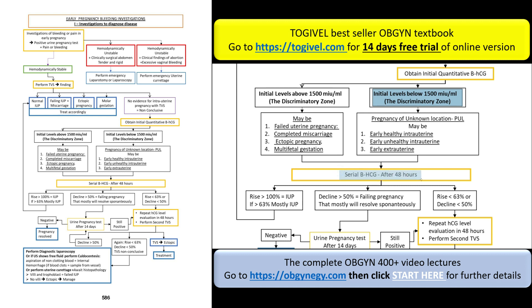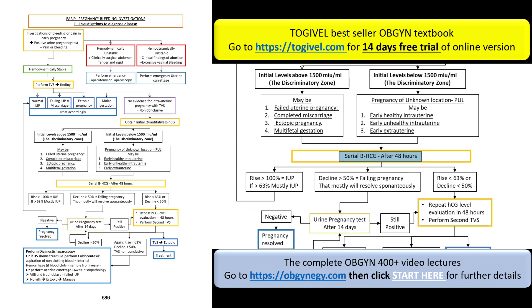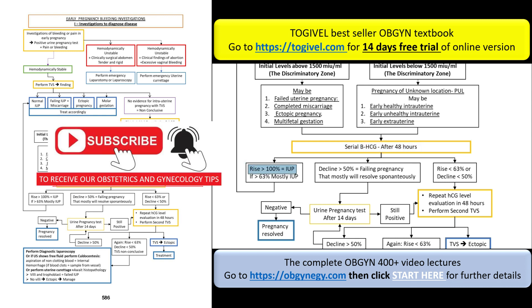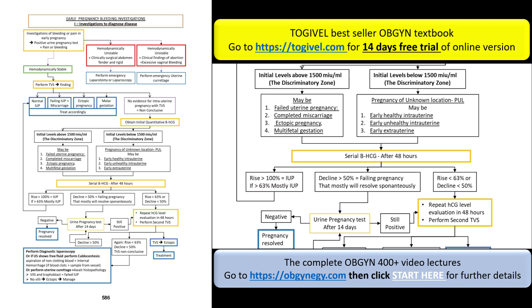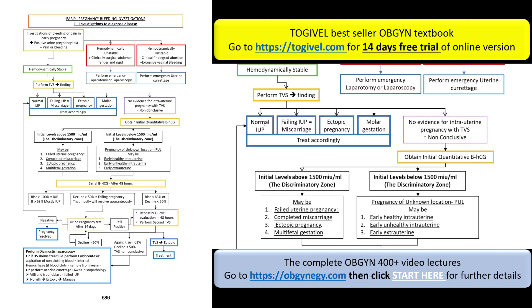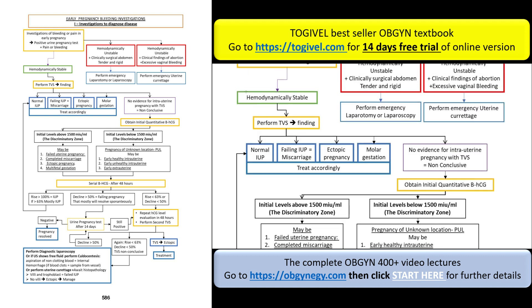To reach a diagnosis, obtain another beta-hCG after 48 hours. If the level rises by 100% — doubling — this only occurs with an intrauterine pregnancy. If the level rises by more than 63% — not doubling but increasing at a rate greater than 63% — statistically in most cases this is an intrauterine pregnancy. You then repeat the TVS, perhaps after one week or ten days, since the patient is hemodynamically stable.